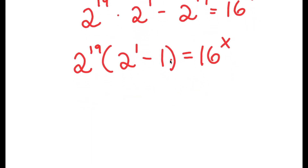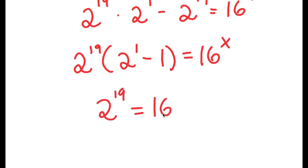And 2 to the power of 1 minus 1, that's simply equal to 1. And anything times 1 is itself. So I have 2 to the power of 19 is equal to 16 to the power of x.